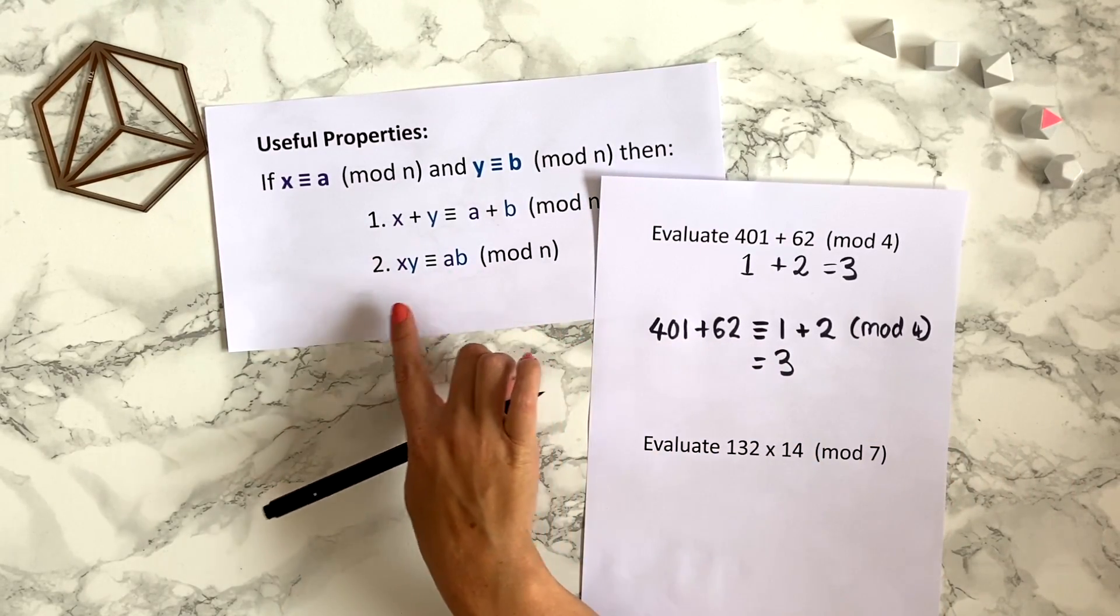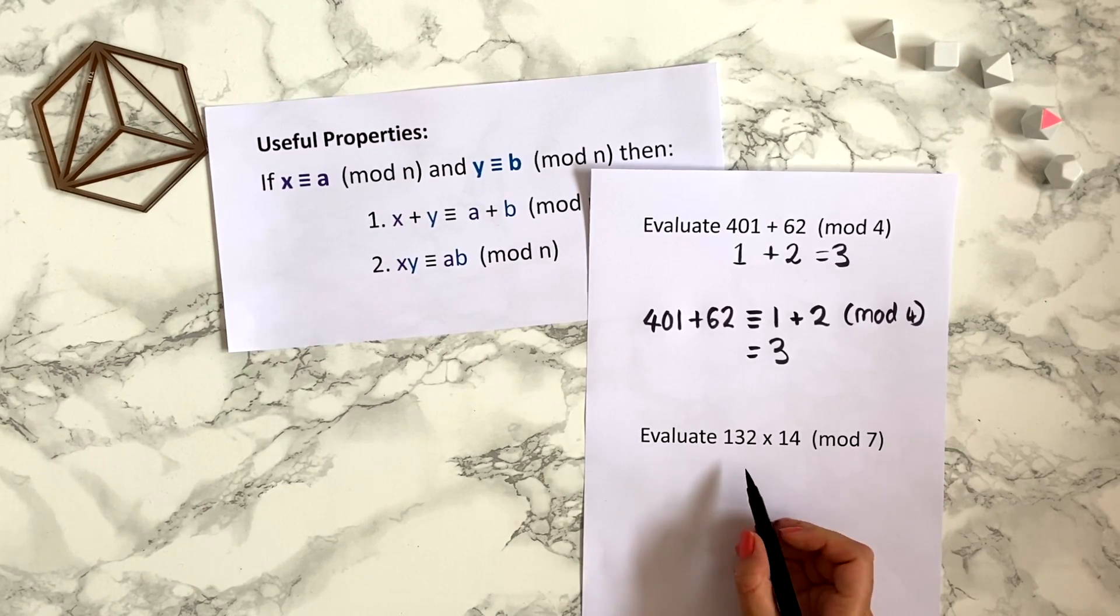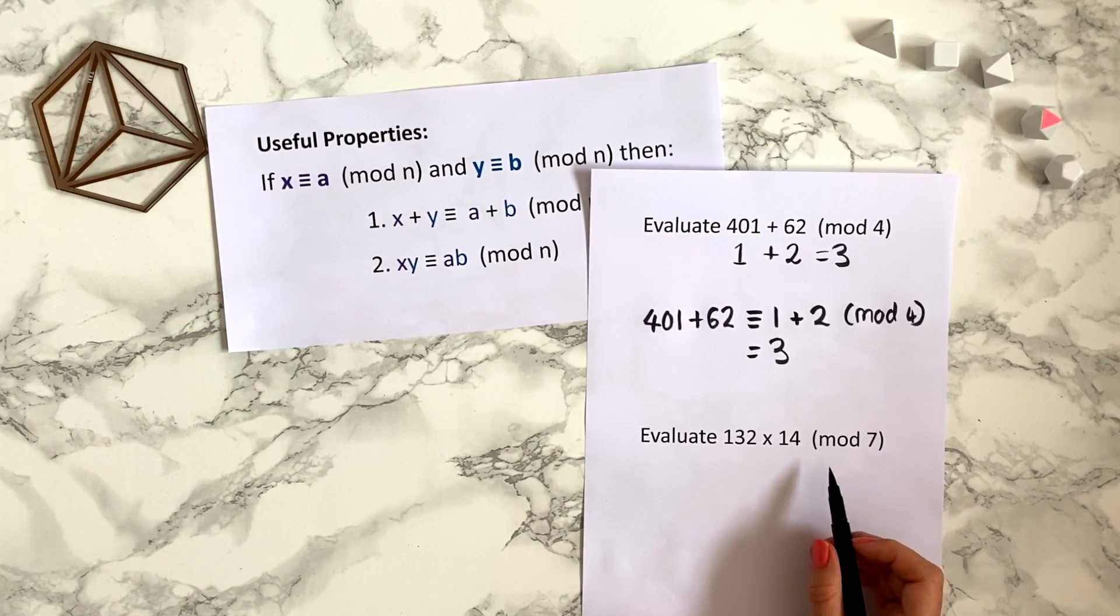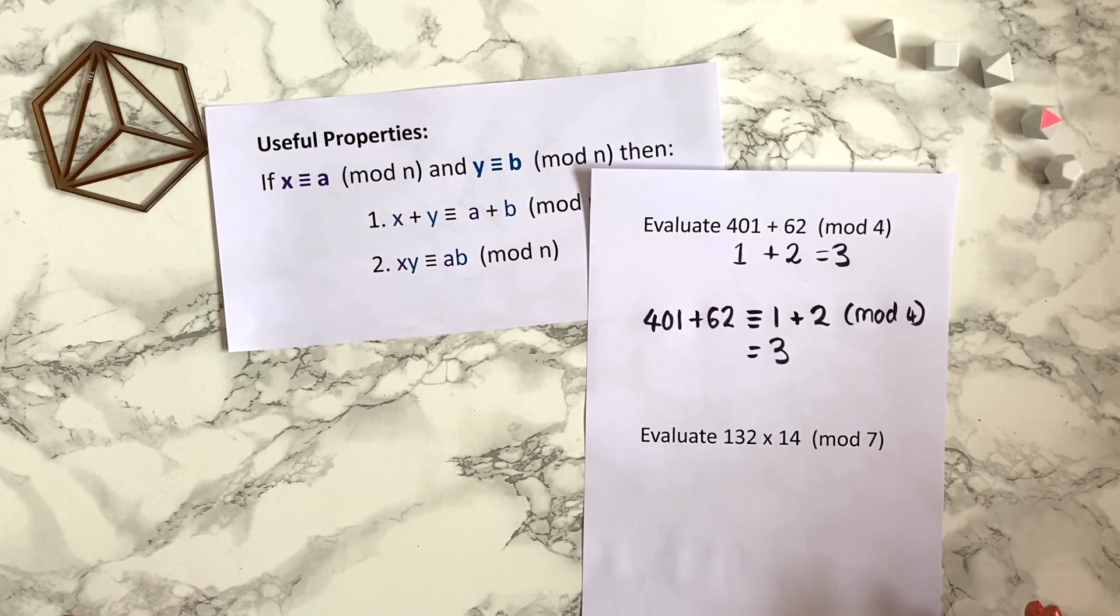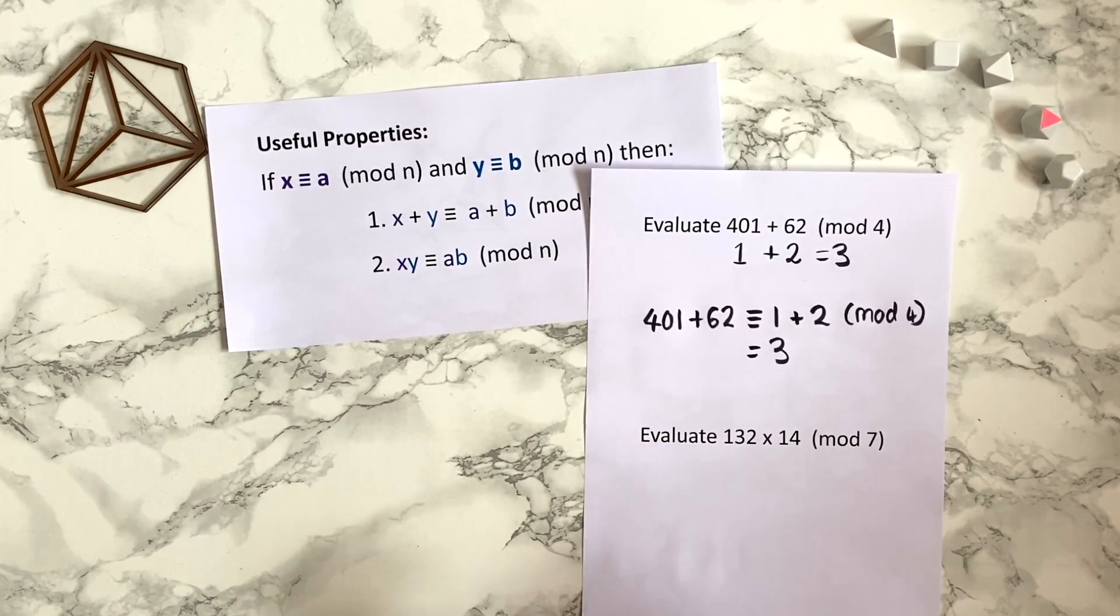Let's try to use the second part of the theorem about multiplication on this question. So to evaluate 132 × 14 mod 7, again we could simply calculate this product and then work out what this big product is modulo 7, or the easier way to save us doing really big multiplications is that we can use this theorem and work out what each of these smaller numbers is modulo 7 and then multiply those together.